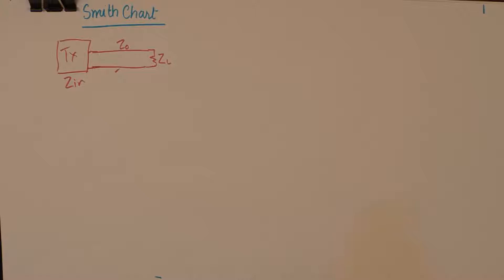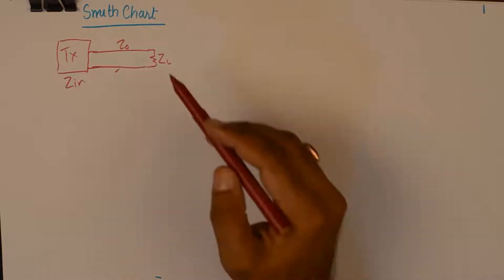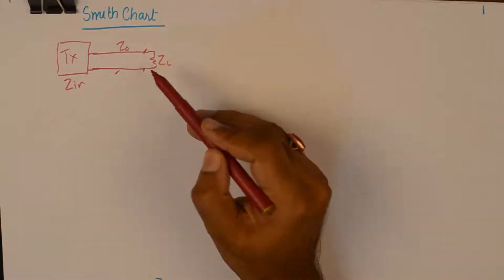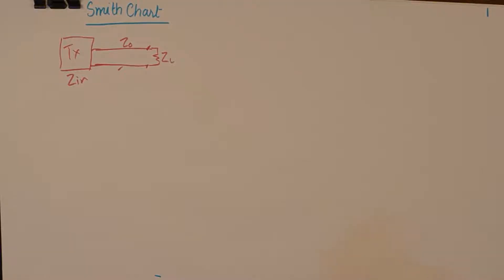Now, whenever a signal is transferred from one point of interface to the other, some part of the signal is reflected back, which causes losses, which is undesirable. And moreover, the signal which is reflected back causes interference with the incoming signal and produces standing wave ratios.